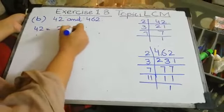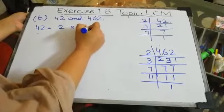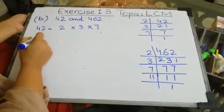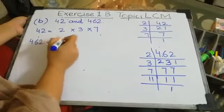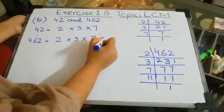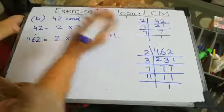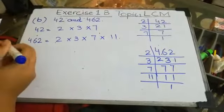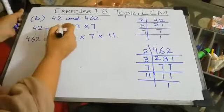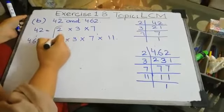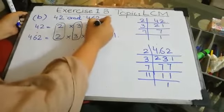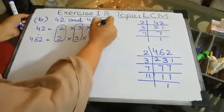So the factors of 42 are 2 × 3 × 7, and the factors of 462 are 2 × 3 × 7 × 11. Now, as we did yesterday, we find the common factors first. So 2 is a common factor, 3 is a common factor, and 7 is a common factor.